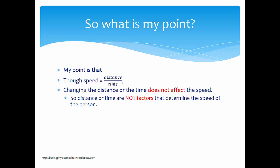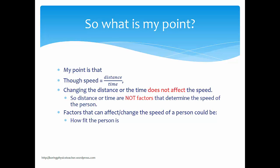Distance and time are not factors that determine the speed of the person. What actually affects or changes the speed could be how fit the person is, whether they're an athlete, the track condition on that day — whether it's smooth or rough or filled with obstacles — or even the weather, such as whether it's rainy, sunny, or windy.